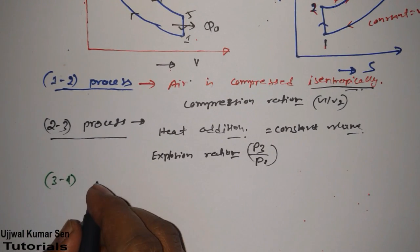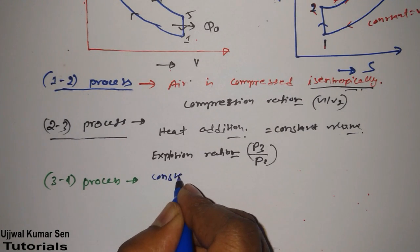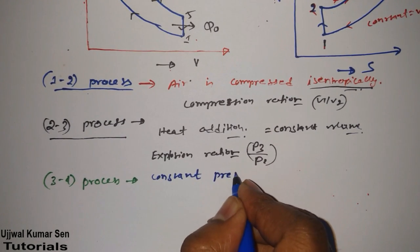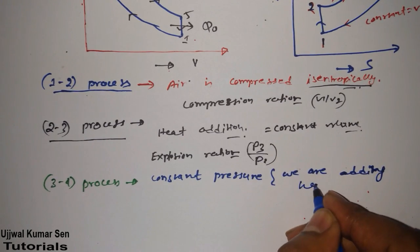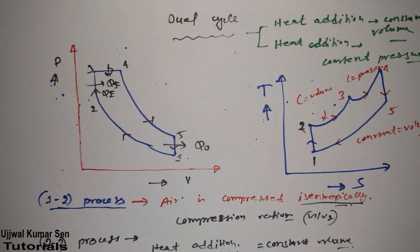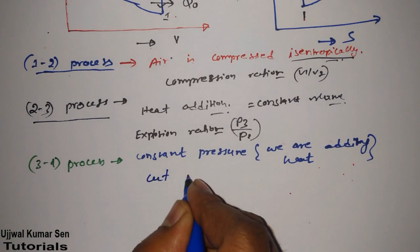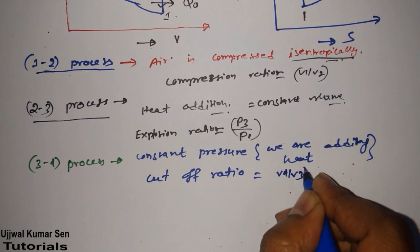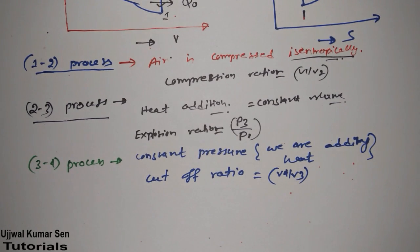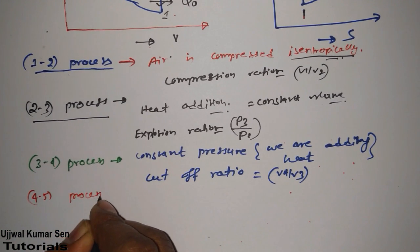For process 3→4: this is a constant pressure process, and heat is also being added here. In this case, we define the cut-off ratio, which is V4 divided by V3.